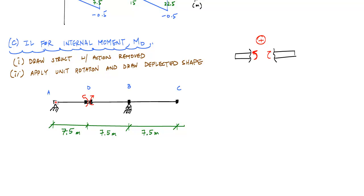And notice, again, because we have an unstable structure by introducing this hinge, we're going to have a bunch of rigid body movements. And these rigid body movements, or at least these rotations, what it means is that segment AD,